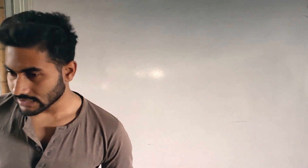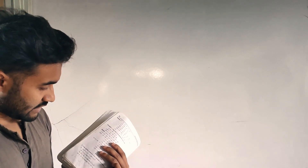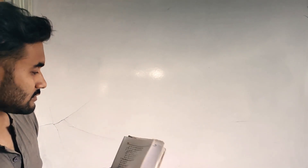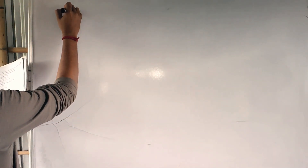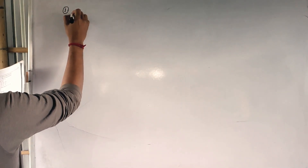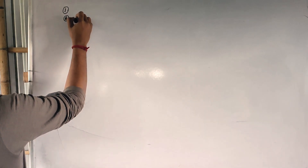Good morning everyone, let us start our class. We were discussing sets exercise 2.4, and today we have to solve question number 1. We have done parts up to D, and E and F are left of the first part of question number 1. So let us solve question number E. It is given that if A union B is equal to A, then B is a subset of A, and conversely — you have to prove it conversely also.